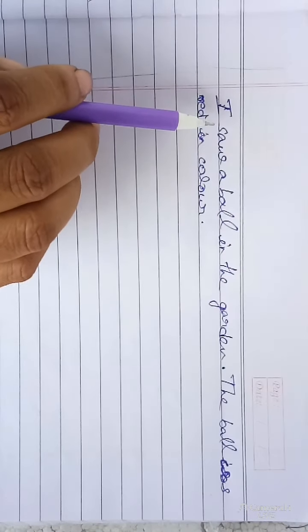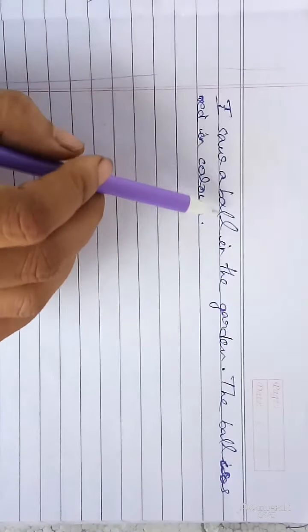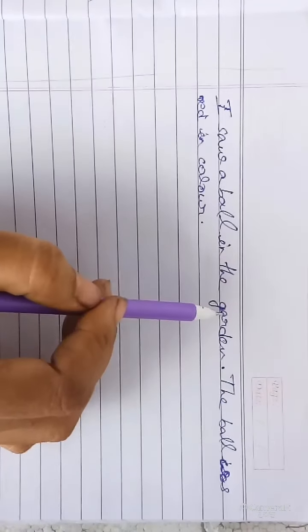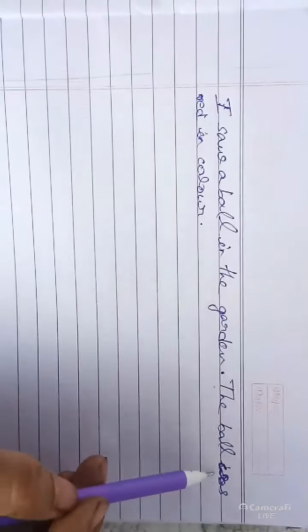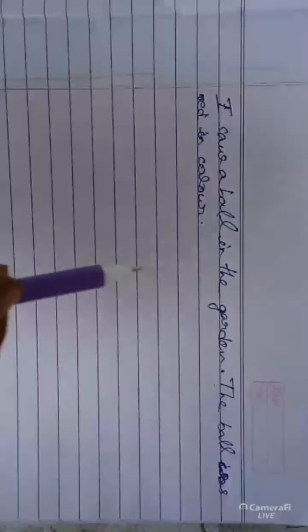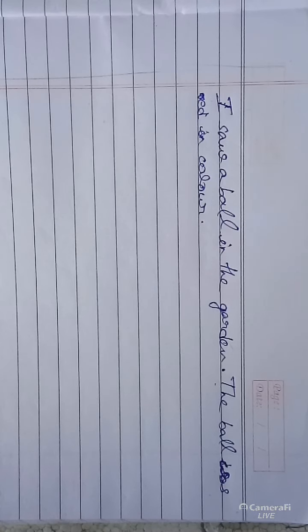I wrote 'I saw a ball in the garden.' The first time I wrote 'a ball in the garden.' When I again refer to that particular thing — the ball — it converts to 'the ball was red in color.' So when we need to refer to a particular thing or person, we use 'the'.